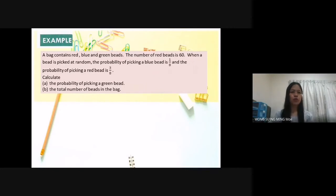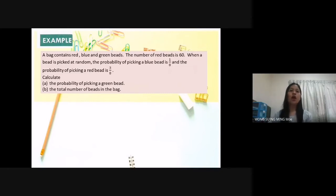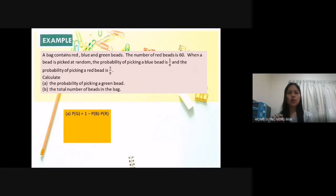Next example: A bag contains red, blue, and green beads. The number of red beads is 60. The probability of picking a blue bead is one over eight, and the probability of picking a red bead is three over eight. Calculate (a) the probability of picking a green bead. P(green) = 1 − 1/8 − 3/8 = 4/8, which simplifies to one over two.